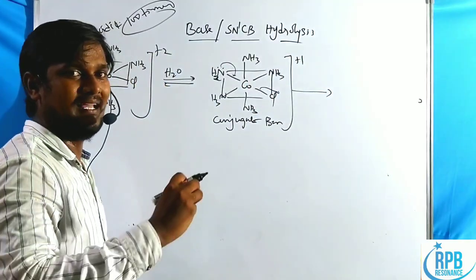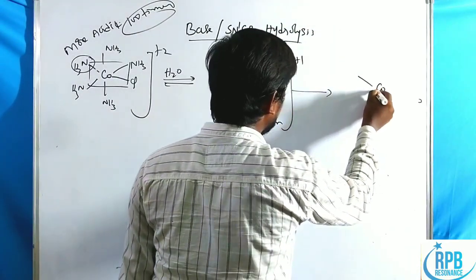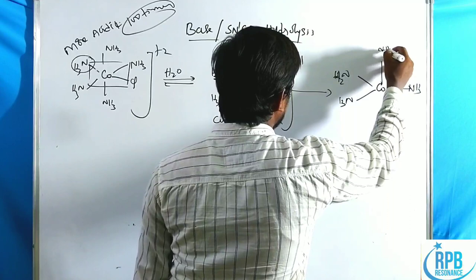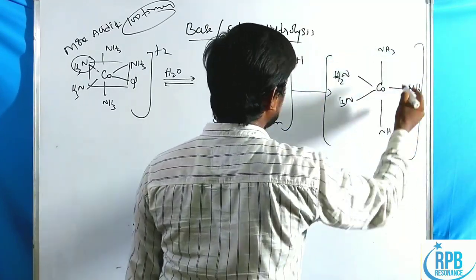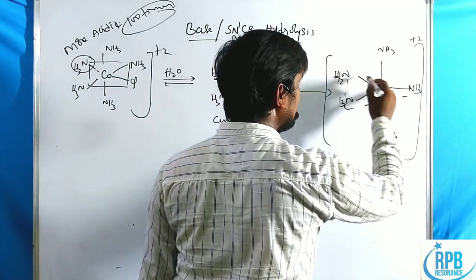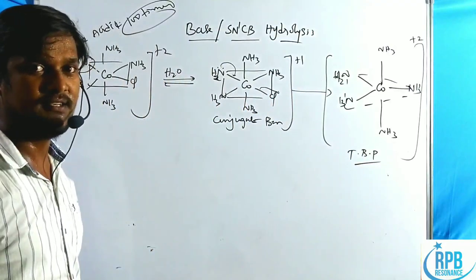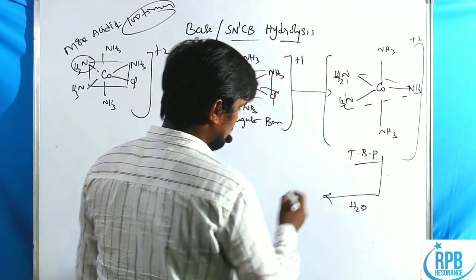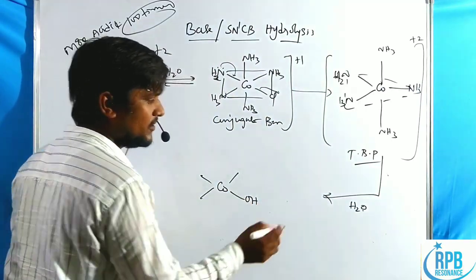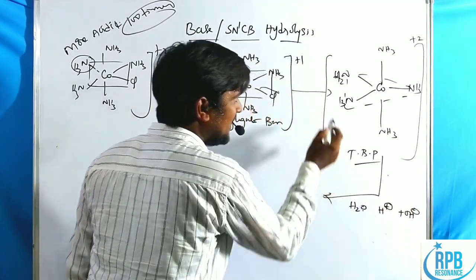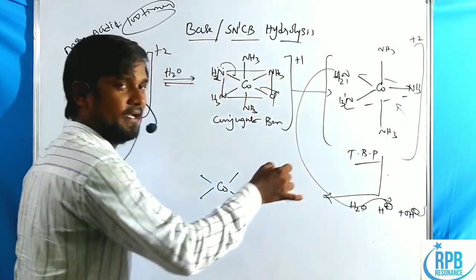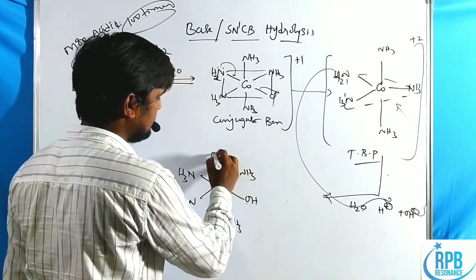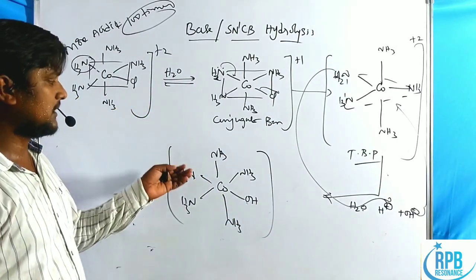The cobalt complex then proceeds through a trigonal bipyramidal intermediate. Water then attacks the vacant site; the NH2 group abstracts a proton from H2O to regenerate NH3, while OH minus attacks the vacant position, giving the final product Co(NH3)5OH with a plus-two charge. This completes the conjugate base mechanism in octahedral structure.